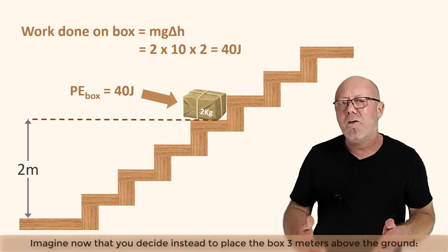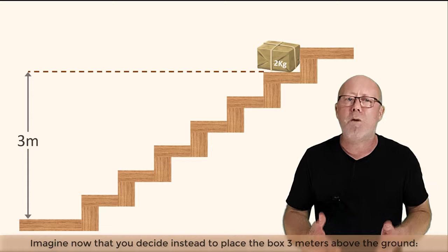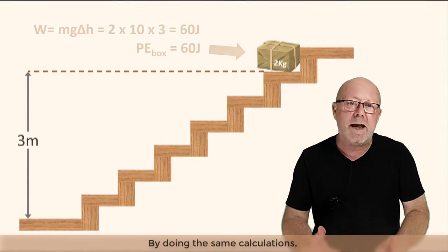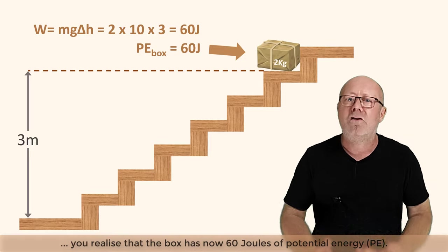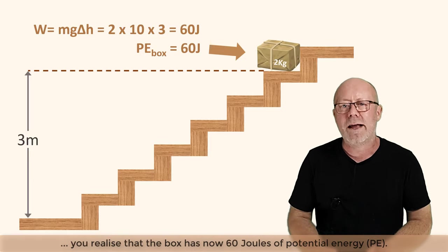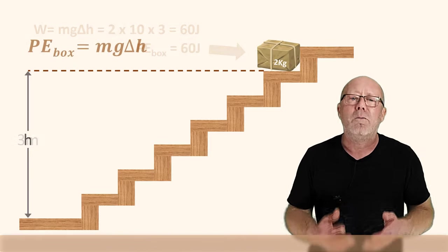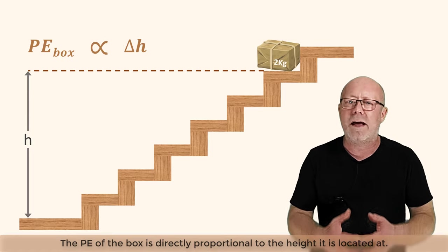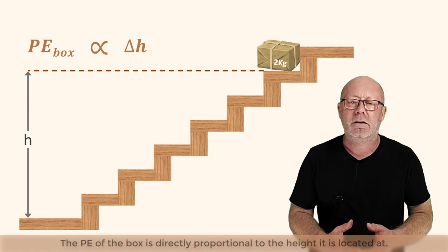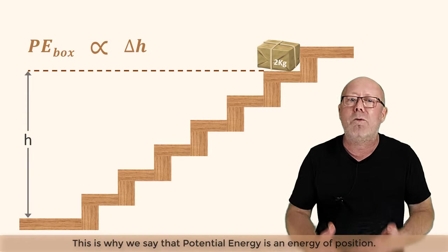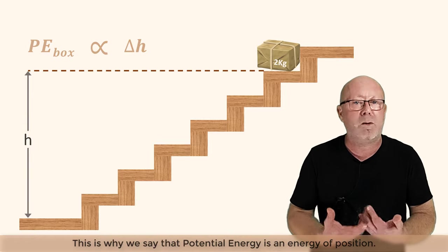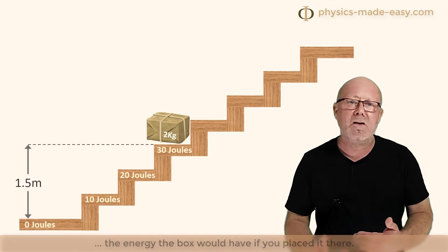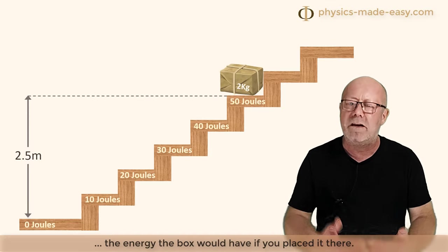Imagine now that you decide instead to place the box 3 meters above the ground. By doing the same calculations, you realize that the box now has 60 joules of potential energy. The potential energy of the box is directly proportional to the height it is located at. This is why we say that the potential energy is an energy of position. You could actually label each step of the stairs with the energy that the box would have if you placed it there.